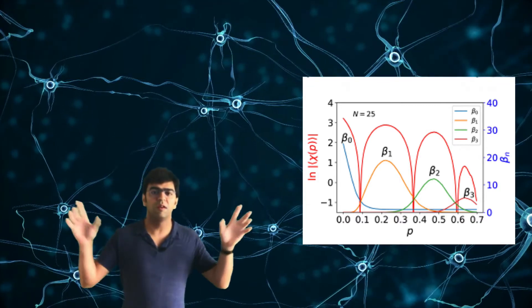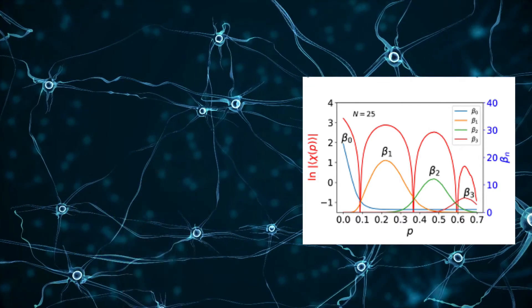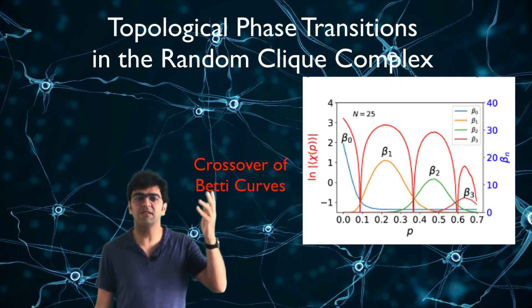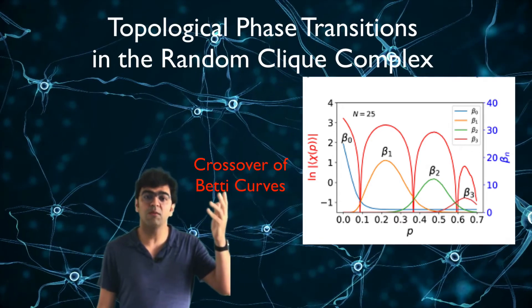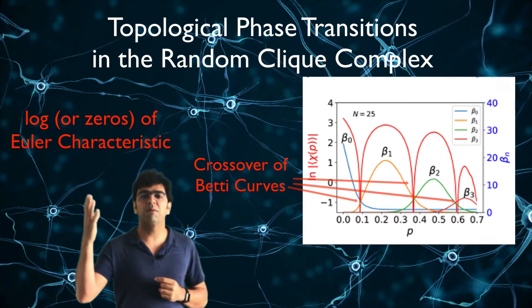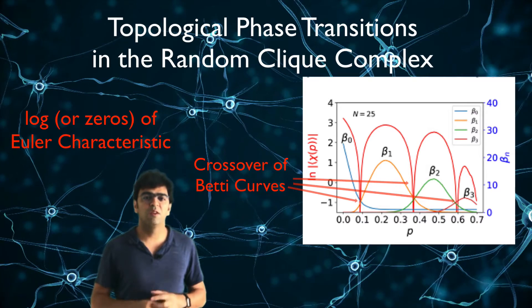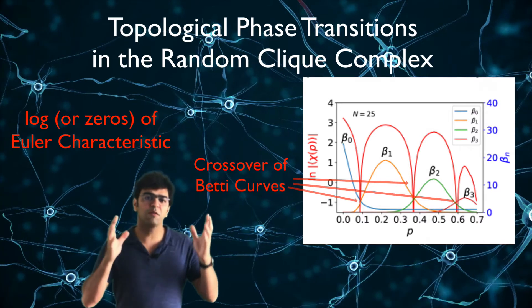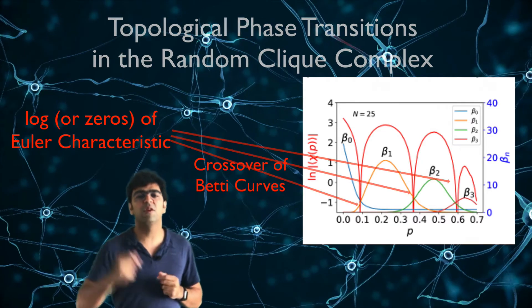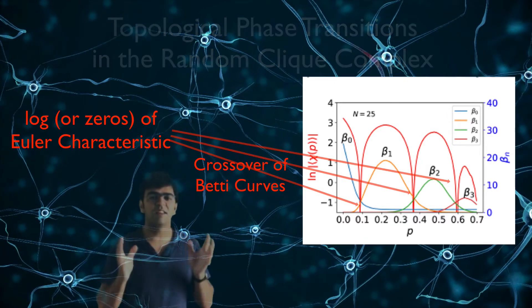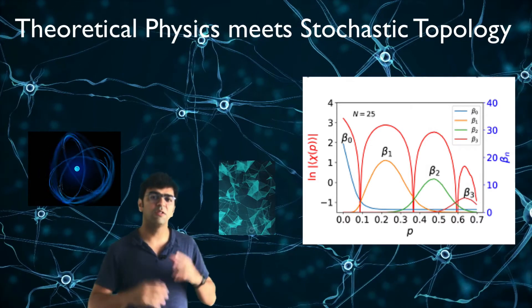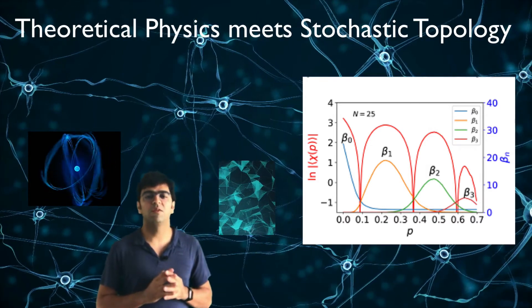Now is the moment where we put both things together. If you can compute the Betti curves and check the phase transitions in simplicial complexes, and at the same time you compute the logarithm of the Euler characteristic, you see that the crossover of the Betti curves happens at the vicinity of the zeros of the Euler characteristic. In this sense, the results from theoretical physics are analogous to the results in simplicial complexes.